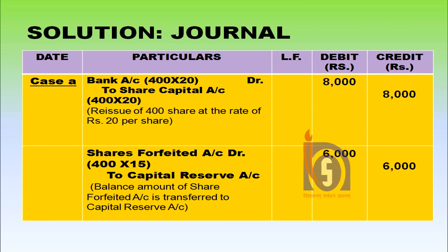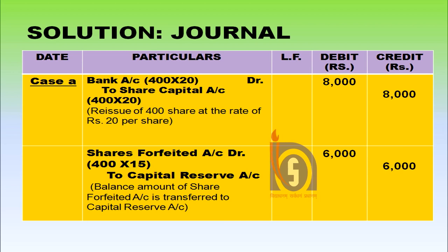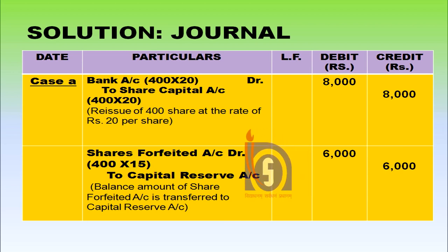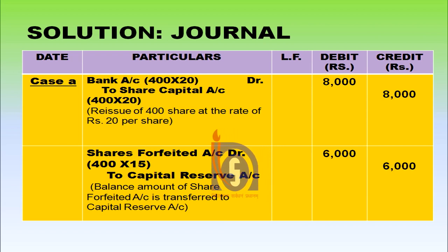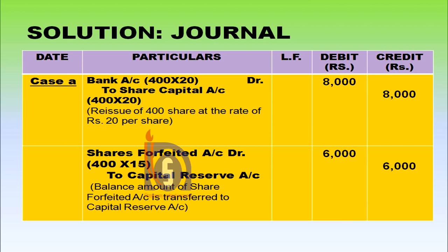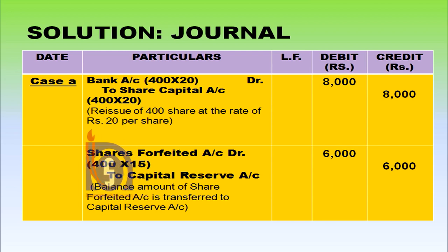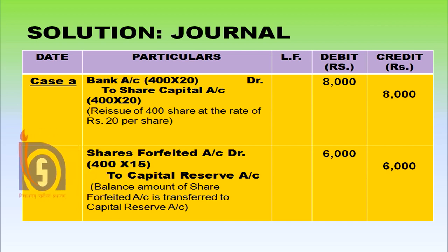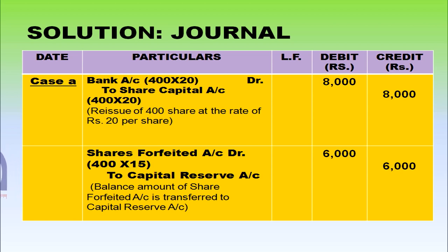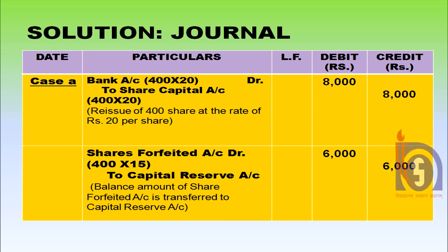For reissue at par, the accounting entry shall be: bank account debited — 400 shares into rupees 20 equals rupees 8000; to share capital account rupees 8000. Then we transfer the entire forfeited amount to capital reserve: share forfeited account debited — 400 into rupees 15 equals rupees 6000; to capital reserve account rupees 6000.